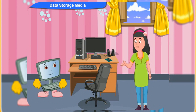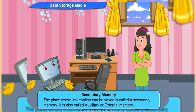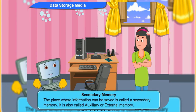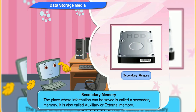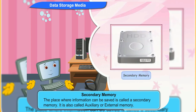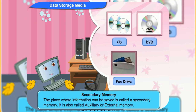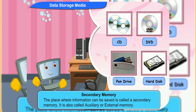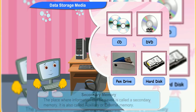Thank you for the information, Clicko. But what is secondary memory? The place where information can be saved is called secondary memory. It is also called auxiliary or external memory. CDs, DVDs, pen drives and hard disks are examples of secondary memory.